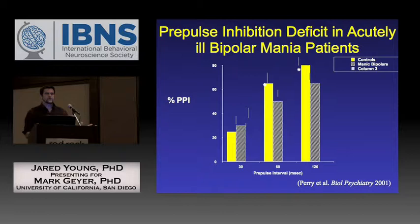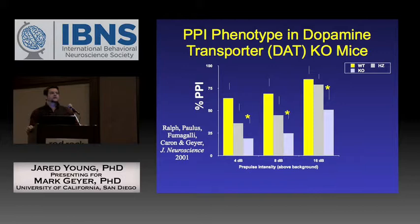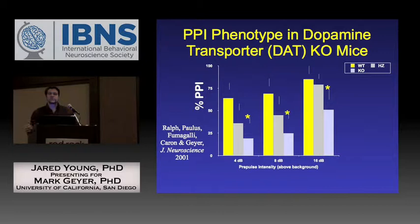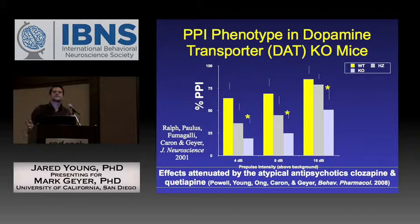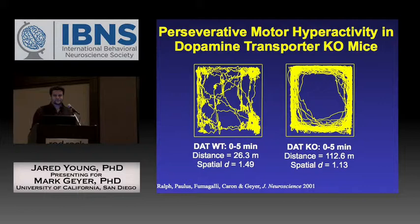In manic bipolar disorder, sufferers show deficits in pre-pulse inhibition, first published in 2001. The dopamine transporter knockout mouse is one animal model with lower PPI compared to wild-type littermates — as pre-pulse intensity increases from 4 to 16 dB above background, PPI increases but remains deficient in knockouts. These effects are attenuated by antipsychotics such as clozapine and quetiapine, demonstrating one approach to cross-species translational research in bipolar disorder.